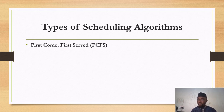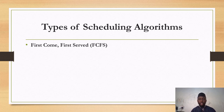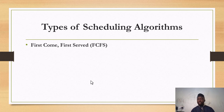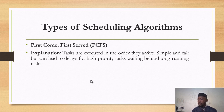In terms of scheduling algorithms, we have First Come, First Served. This is like waiting in line at the grocery store or in the supermarket. Tasks are executed in the order they arrive. It is simple and fair, but it can lead to delays if tasks that take a long time arrive first, causing high priority tasks to wait behind long-running tasks.